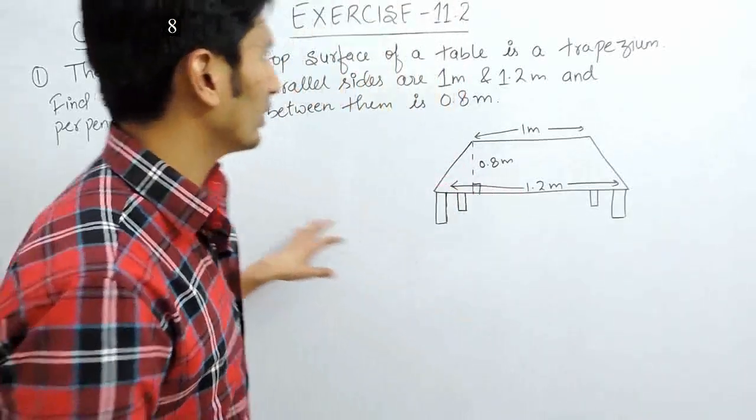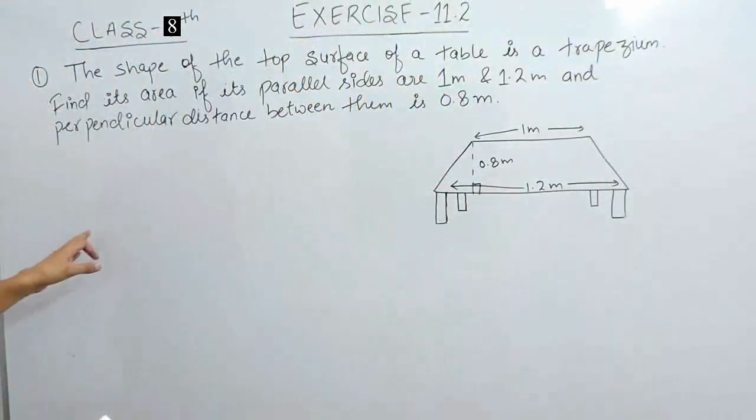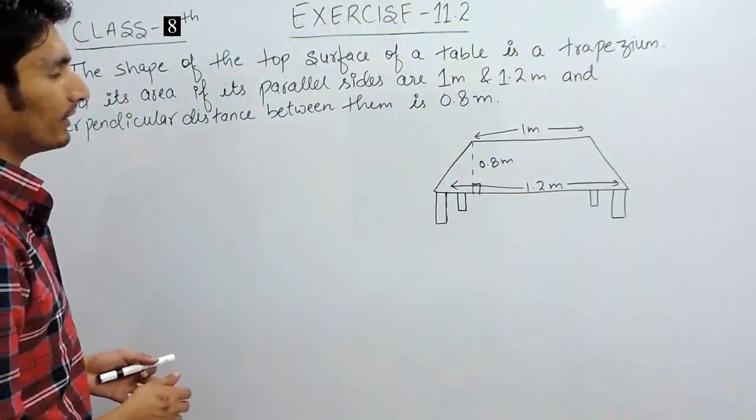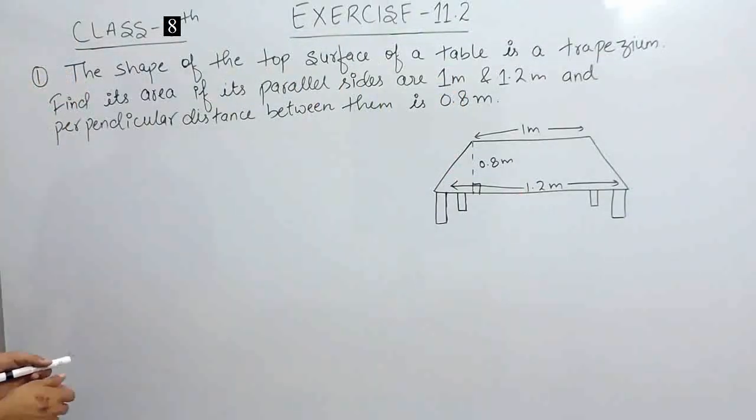Hello everyone, in this video we are starting exercise 11.2 and the first question is the shape of the top surface of a table which is a trapezium. You have to find its area.